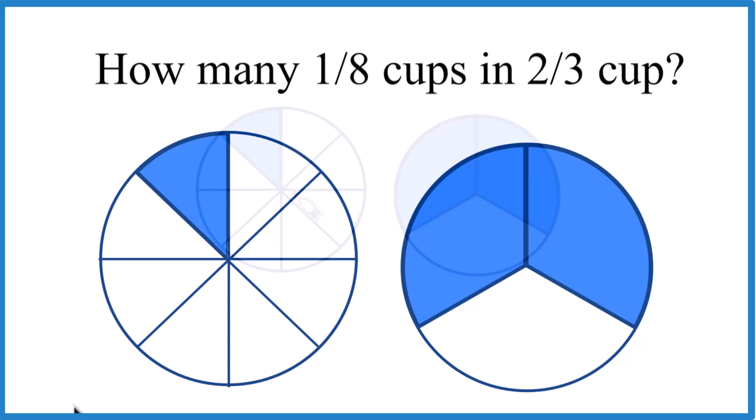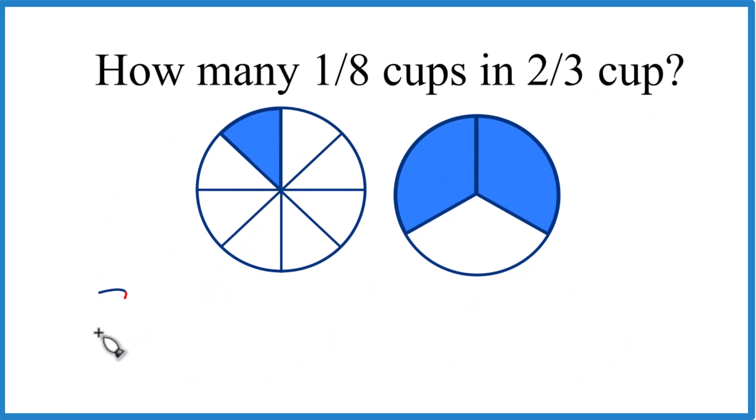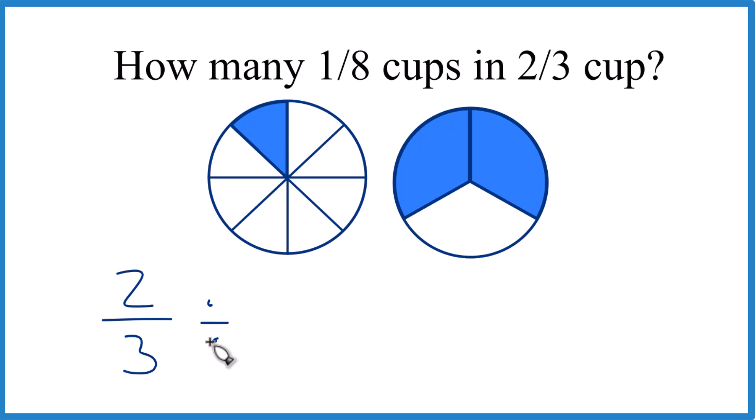Let's do this mathematically. So we have two-thirds of a cup here and we want to know how many times does one-eighth go into two-thirds. So two-thirds divided by one-eighth.